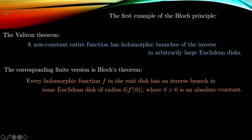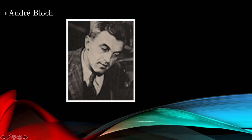The first instance of the Bloch principle involves the Valiron theorem, which states that a non-constant entire function has holomorphic branches of the inverse in arbitrarily large Euclidean disks. The corresponding finite version is that every holomorphic map in the unit disk has an inverse branch in some Euclidean disk of radius δ times the absolute value of the derivative of f at the origin, where δ is a universal constant independent of the map.